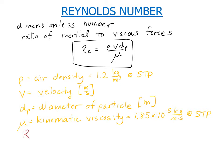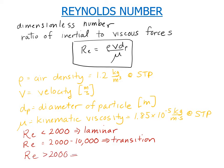Now if the Reynolds number turns out to be less than 2,000, that means that our flow conditions are laminar. If it's somewhere in the range of 2,000 to 10,000, then it's in the transition regime. And if it's greater than 2,000, then the flow is turbulent.